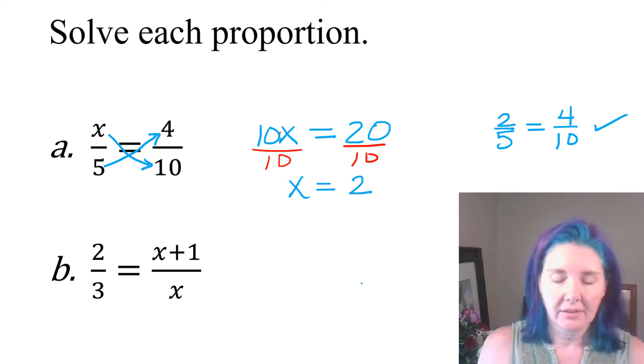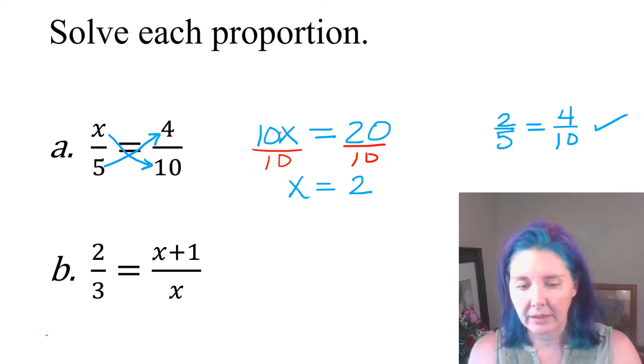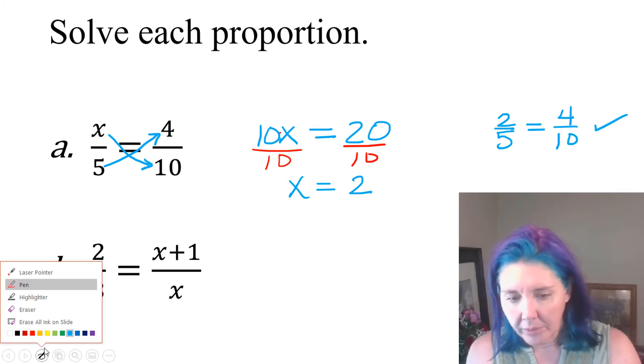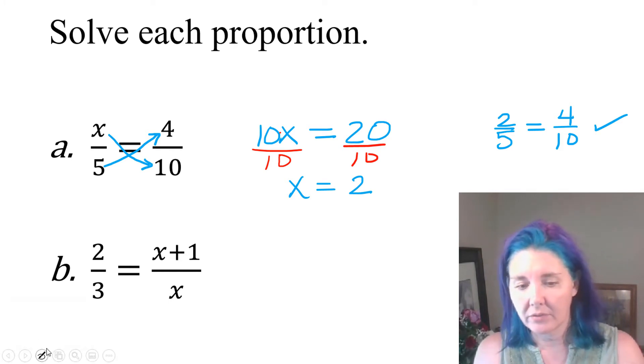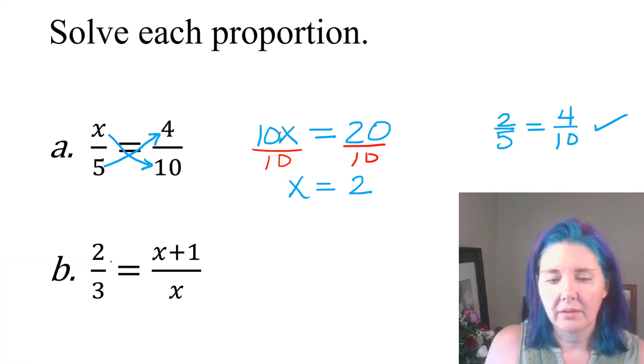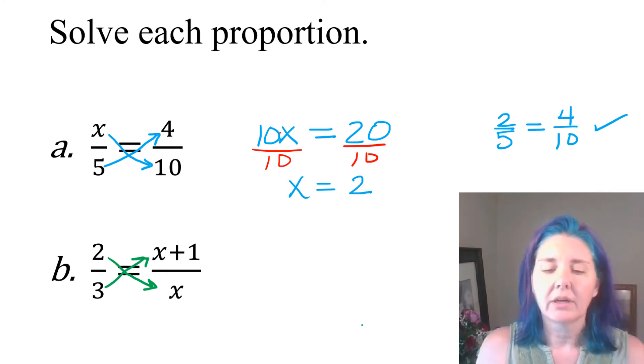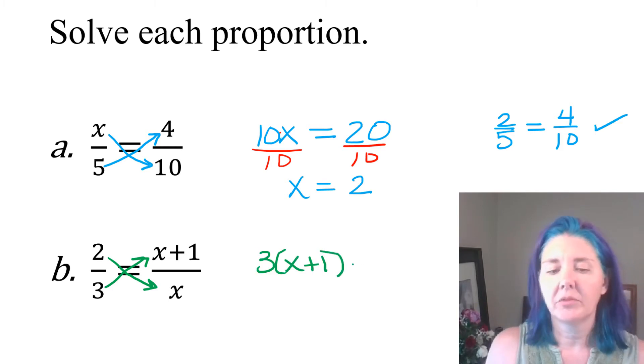Let's try that same technique with a slightly more advanced proportion. In part b, we have 2 thirds equals x plus 1 over x. So the x appears in two places. Let's see if this cross multiplying technique works here. Okay, so we're going to take the product of the means, which is 3 times x plus 1, times the product of the extremes, which is 2x. So no longer do we have fractions.